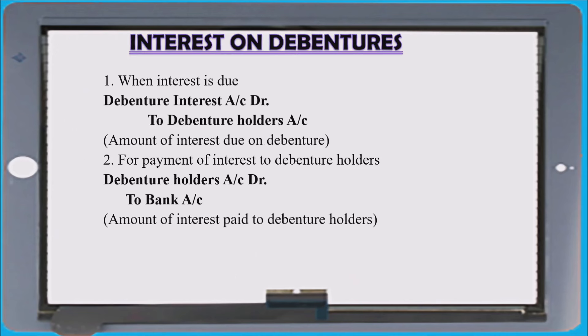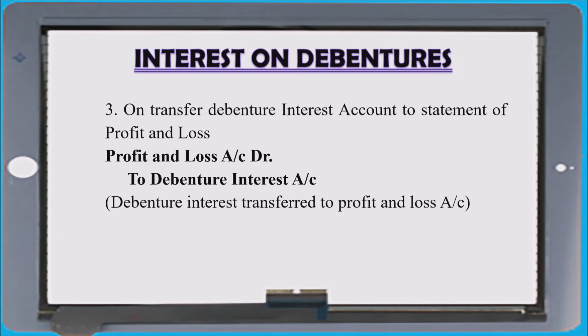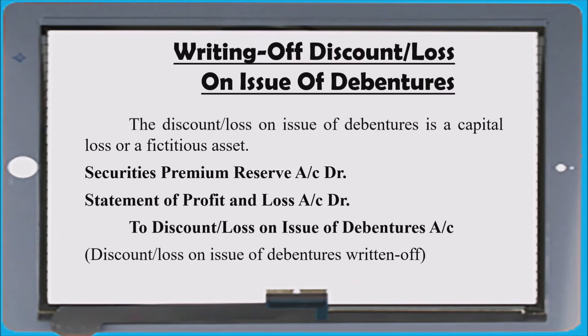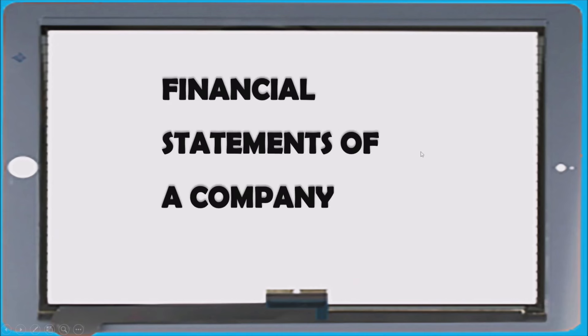Interest on debenture entries: due entry — debenture interest to debenture holders account. Payment to holders: debenture holders to bank. When we write it off: statement of profit and loss to debenture interest. Last entry from debenture area — remember which sources we can use for writing off discount or loss on issue of debentures: securities premium reserve, statement of profit and loss, to loss on issue of debenture. That covers the debenture area.